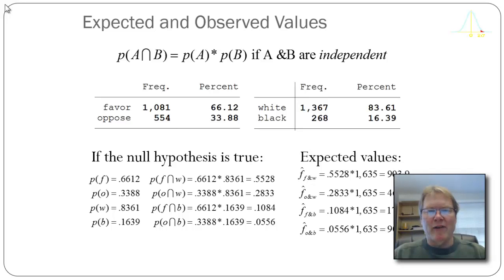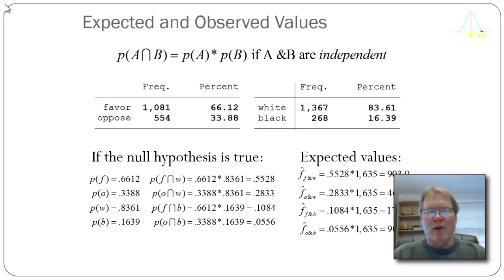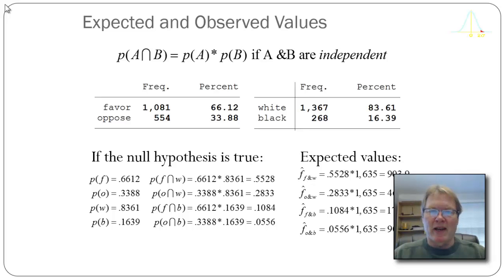These two methods give slightly different numbers than using the formula shown at the beginning of the video due to rounding error. But the formula shown on the first slide gives very precise numbers because we're not using fractional values. The key point is that expected values simulate what chance looks like — one state of reality — and we compare that to what we actually observe to decide whether what we see is similar to chance or different from it. In this example, white respondents are more likely to favor capital punishment than black respondents, and that difference is statistically significant.